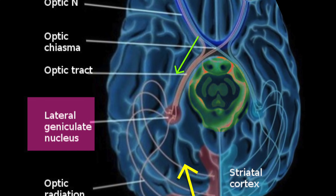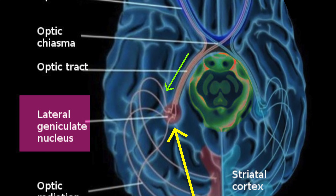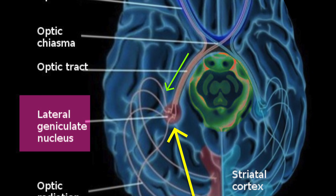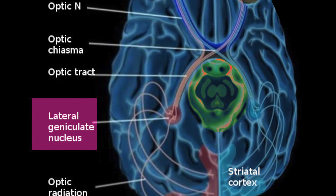Interestingly, most of the fibers coming into the LGN are not from the retina, but are feedback from the cortex. This feedback allows the cortex to influence what information the LGN sends to it — essentially telling the LGN what to pay attention to.